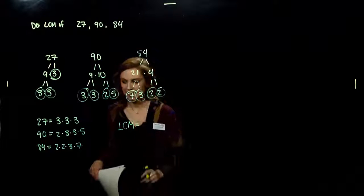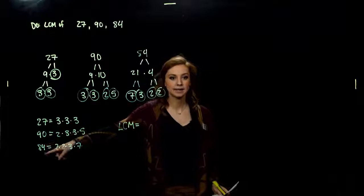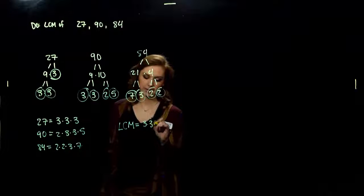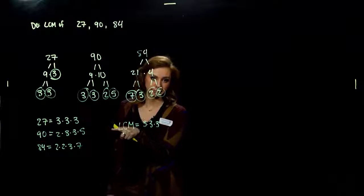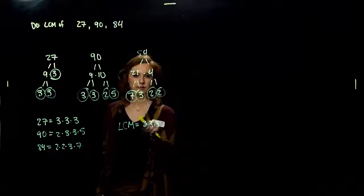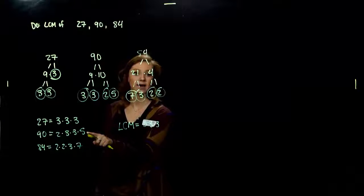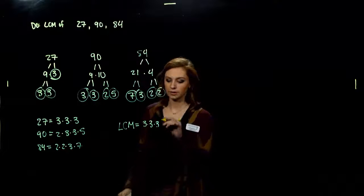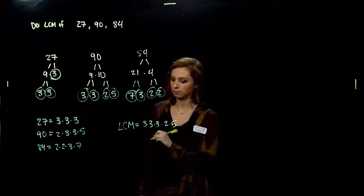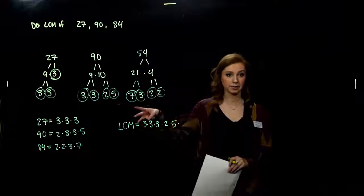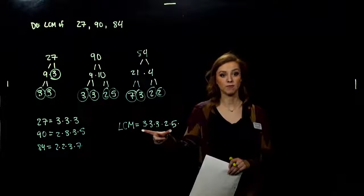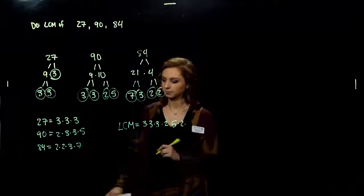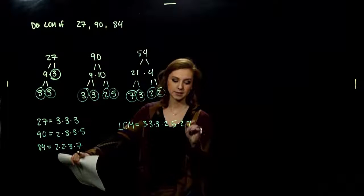The least common multiple has to be divisible by 27, 90, and 84. Starting with 27 — taking its three factors of 3 into my LCM — I then ask: what am I missing from 90? I need another factor of 2 and a factor of 5. Then comparing with 84: I already have one factor of 2, but I need another — and I'm also missing a factor of 7.